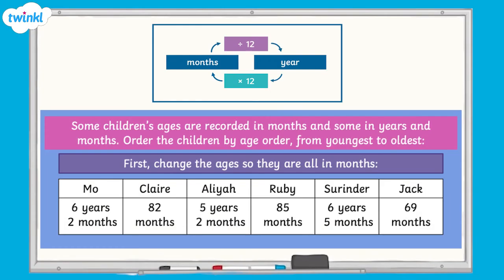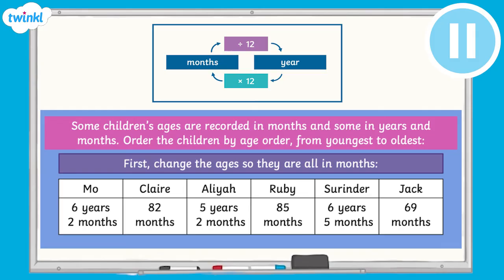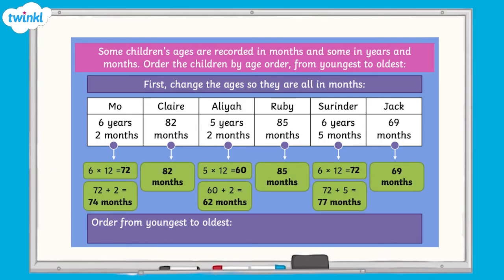Now it's your turn to have a go. Some children's ages are recorded in months, and some in years and months. Order the children by age from youngest to oldest. Pause the video now and have a go. Well done. Check your answers carefully. By converting all of the ages to months, we can see that Aaliyah is the youngest, followed by Jack, then Moe, then Sarinda, Claire, and finally Ruby.